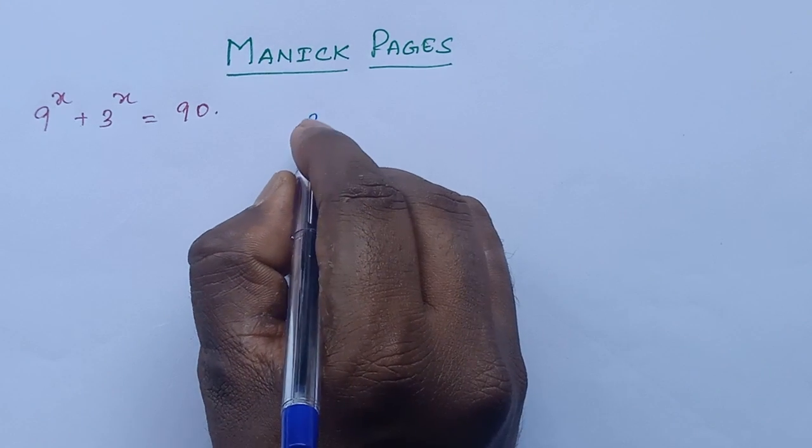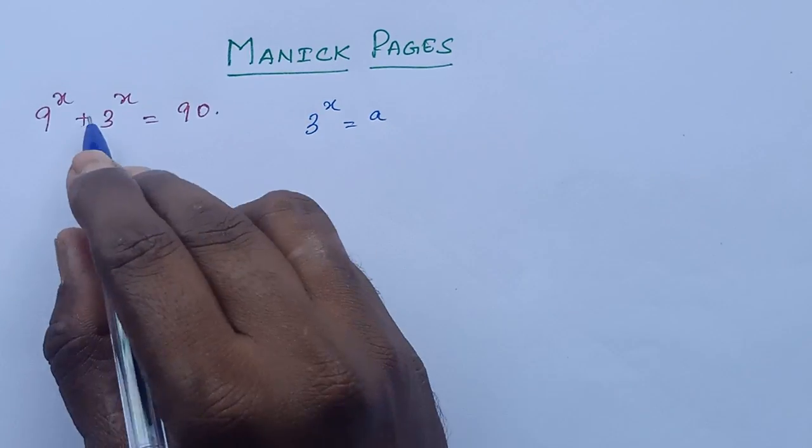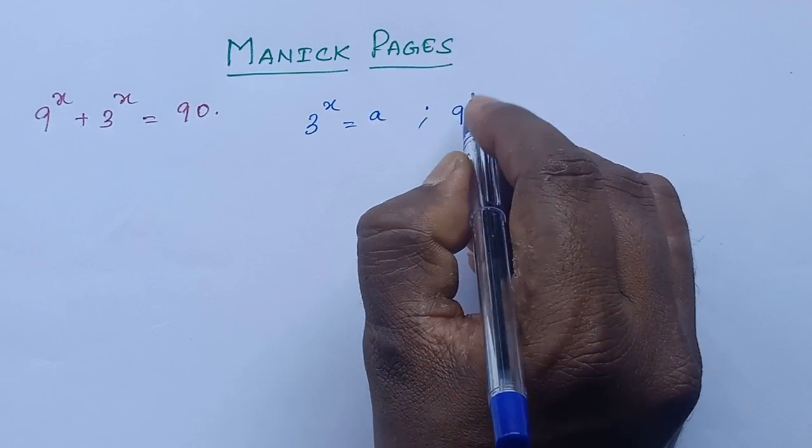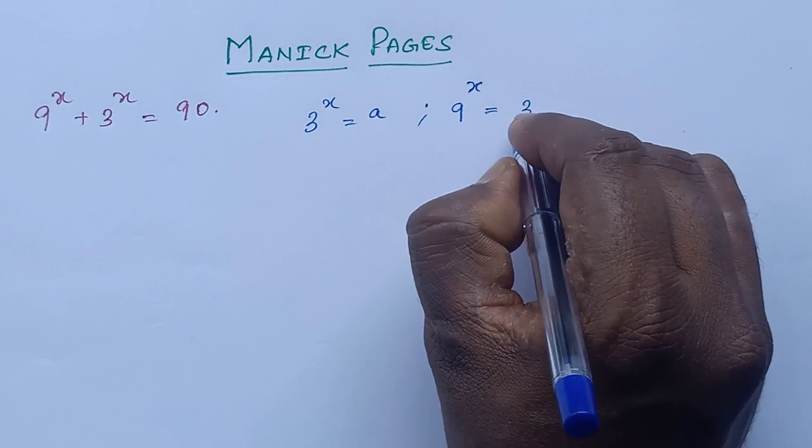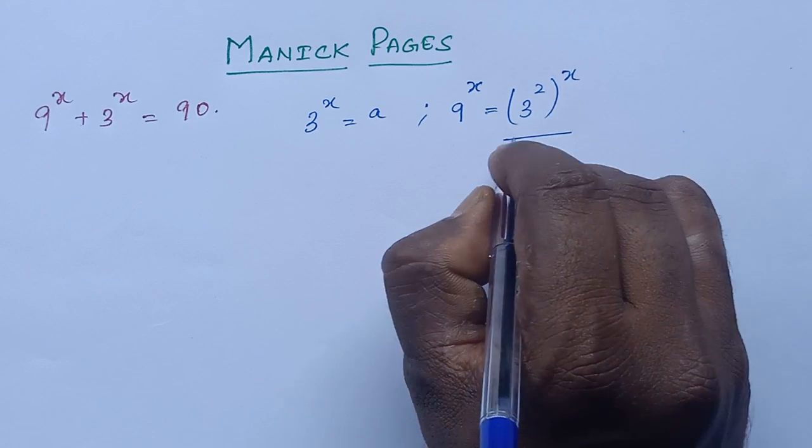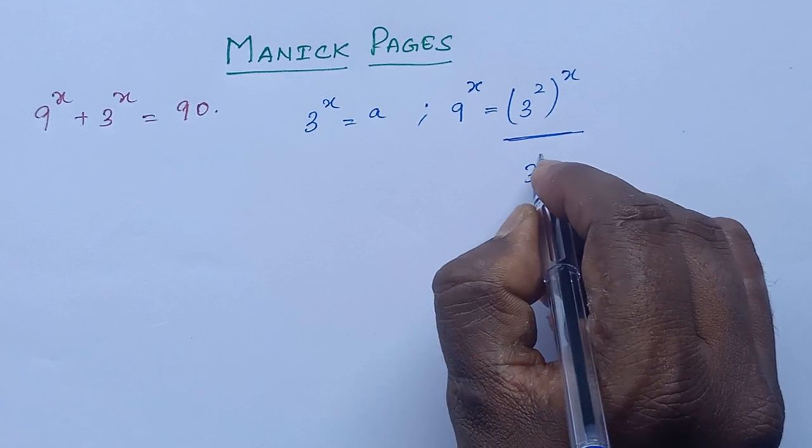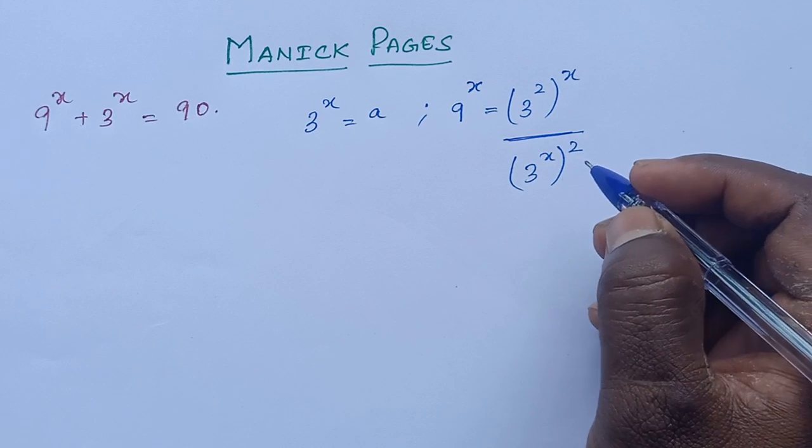Now here, we take 3^x as a, and 9^x we can write like 3 squared, all to the power x. This is nothing but (3^x)^2.